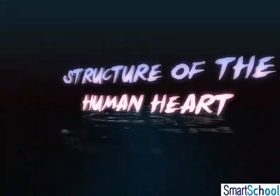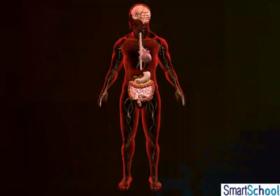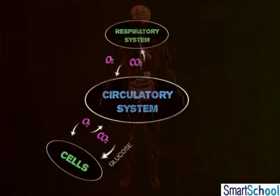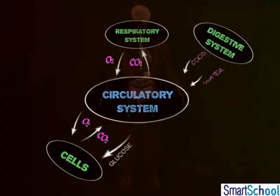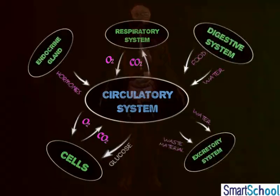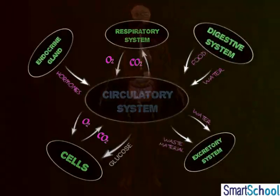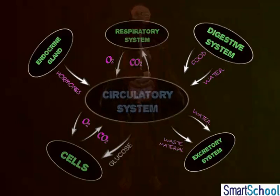Structure of the Human Heart. In human beings, the transport of substances such as oxygen, carbon dioxide, digested food, excretory products, etc., is carried out by specialized long-distance transport systems constituting the circulatory system of our body.